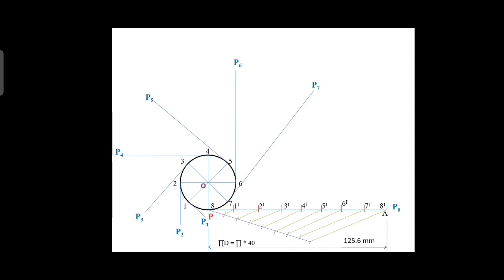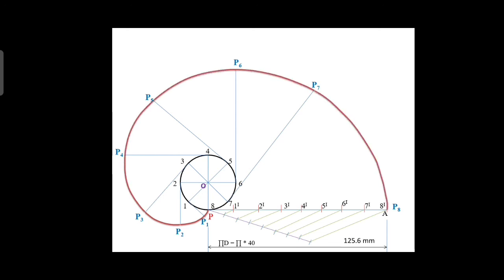Finally, join all the points by freehand sketch — P to P1, P1 to P2, P2 to P3, and join the remaining points. You will get the involute curve on this circle.